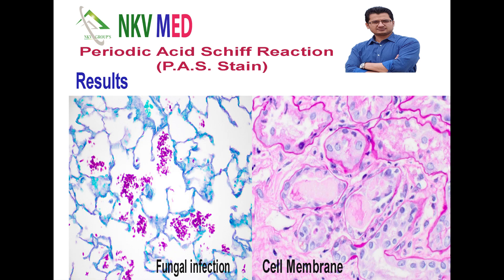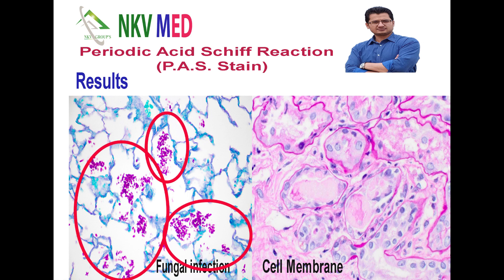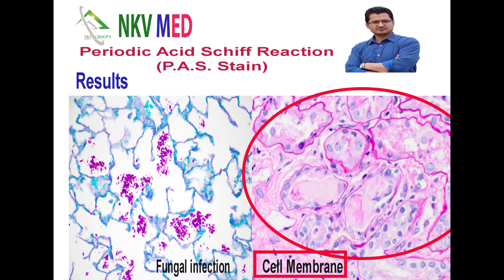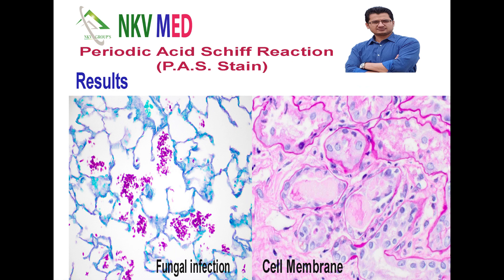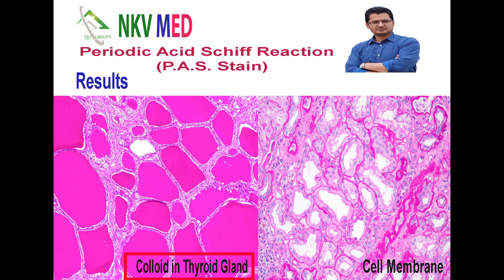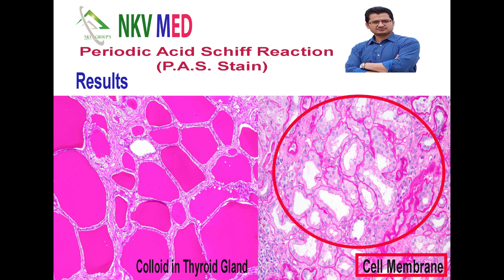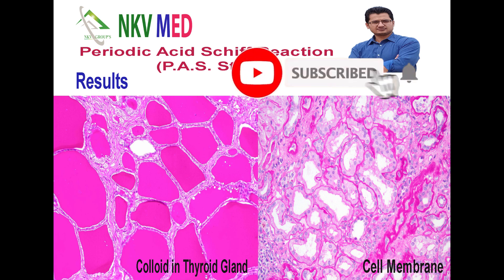In the results: the first slide from the lung section shows fungal infection. The second slide from the kidney shows tubules where the cell membrane is clearly visible with PAS stain. Another section from the thyroid gland demonstrates the colloid within the thyroid gland tissue. In the next slide, the basement membrane or cell membrane is clearly observable. PAS stain is very good for demonstration of glycogen, cell membrane, or colloid. Please subscribe, like, comment, and share this video.